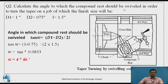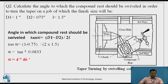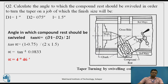Second numerical: Calculate the angle to which the compound rest should be swivelled using the following dimensions — d1 = 1 inch, d2 = 0.75 inch, L = 1.5 inch. Substituting in tan α = (d1 − d2) / 2L gives tan α = (1 − 0.75) / (2 × 1.5), and we get α = 4 degrees. These are simple numericals based on taper turning by swivelling the compound rest and swivelling plate.